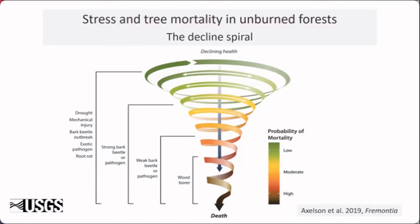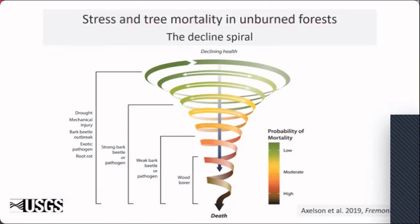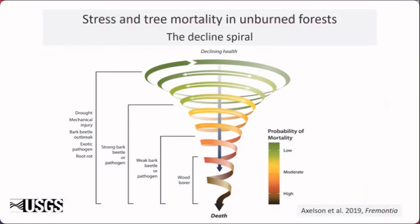We might also be seeing increasing fire severity just from drought effects alone. Let's think about how stress and tree mortality work in unburned forests. There's a conceptual model called the decline spiral — here shown as the decline funnel. The health of an individual tree declines, the risk of death increases, requiring less potent disturbances to lead to mortality. As conditions change, trees may recover and move back up the spiral. However, the further a tree declines, the less likely it is to recover until there is no escape and the tree dies.